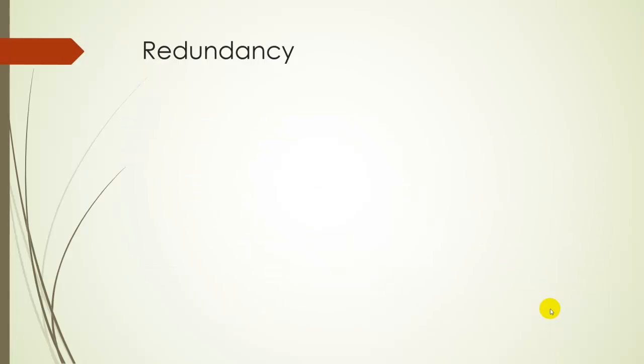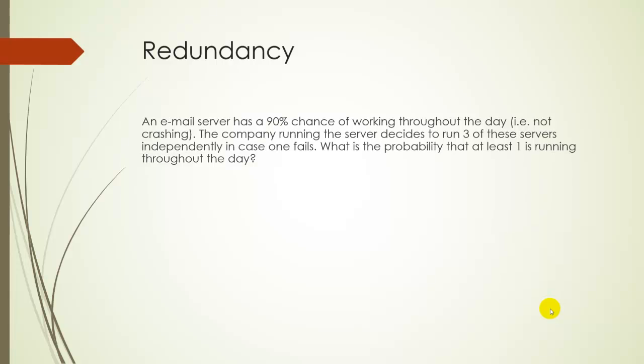The next example explores redundancy. Most businesses have built-in redundancy. Really, this is just to decrease their risk. For example, let's say an email server has a 90% chance of working throughout the day. In other words, not crashing. A company running the server decides that they want to run three of these servers independently in case one of them fails. So what's the probability that at least one of those servers is running throughout the day? In other words, what's the probability that the combined server stays up and customers don't get angry?